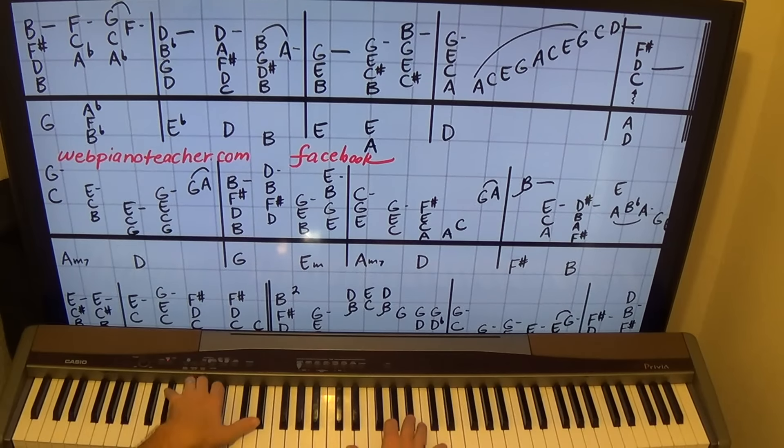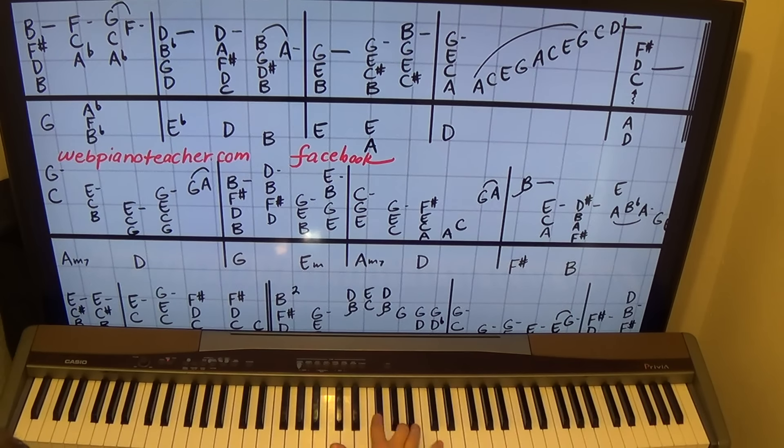D, G, B flat, D left hand on E flat. 1, 2. Really stretch those 2 counts out because the singer is improvising and taking their time. So you've got to stretch it out a little bit. Count 3.